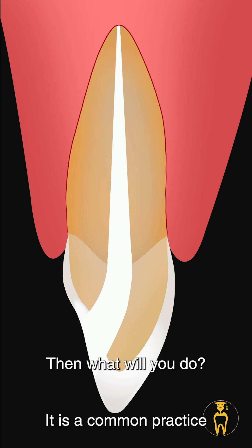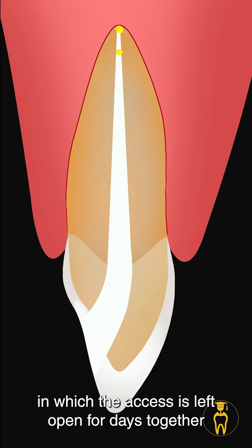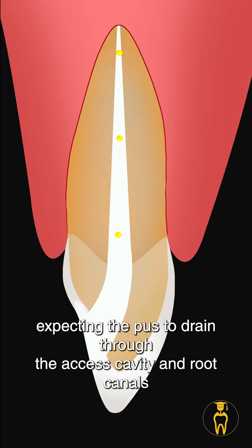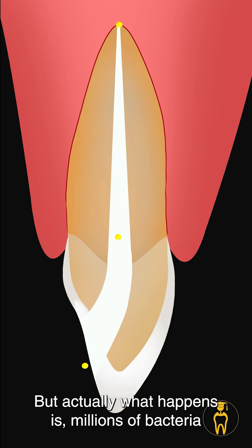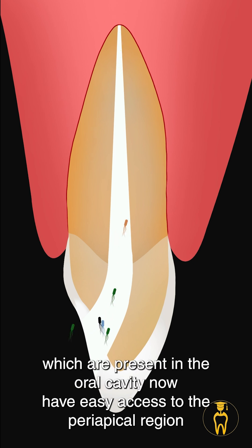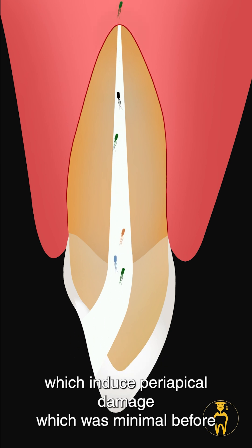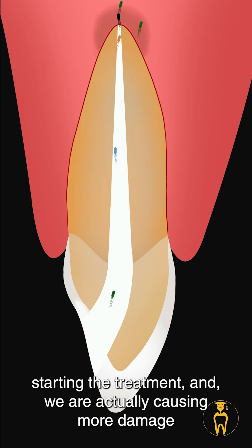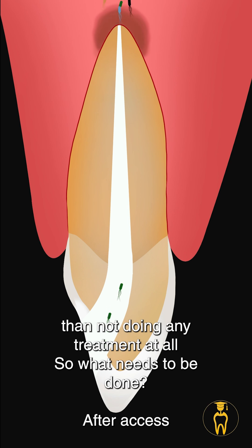It's a common practice — the access is left open for days together, expecting the pus to drain through the access cavity and root canals. But actually what happens is millions of bacteria present in the oral cavity now have easy access to the periapical region, which induces periapical damage that was minimal before starting the treatment. We are actually causing more damage than not doing any treatment at all.